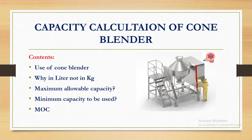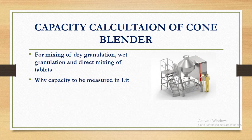We will see the use of the blender. The maximum allowable capacity — if you fill the blender too much, you should use the minimum capacity for maximum efficiency of mixing. The cone blender and mixer is used for mixing of dry granulation, wet granulation, or direct mixing of tablets and most products, to achieve a homogenous mix.